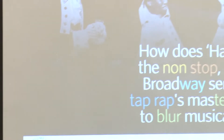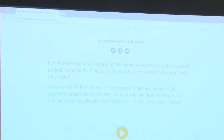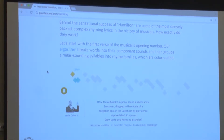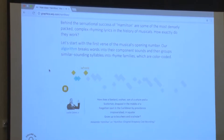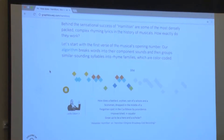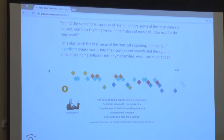This is what the interactive actually looks like. You load it, see the headline, scroll down, and then get to press play. And this is what happens: 'How does a bastard, orphan, son of a whore and a Scotsman, dropped in the middle of a forgotten spot in the Caribbean by Providence, impoverished and in squalor, grow up to be a hero and a scholar.' That is the opening verse of the musical Hamilton.